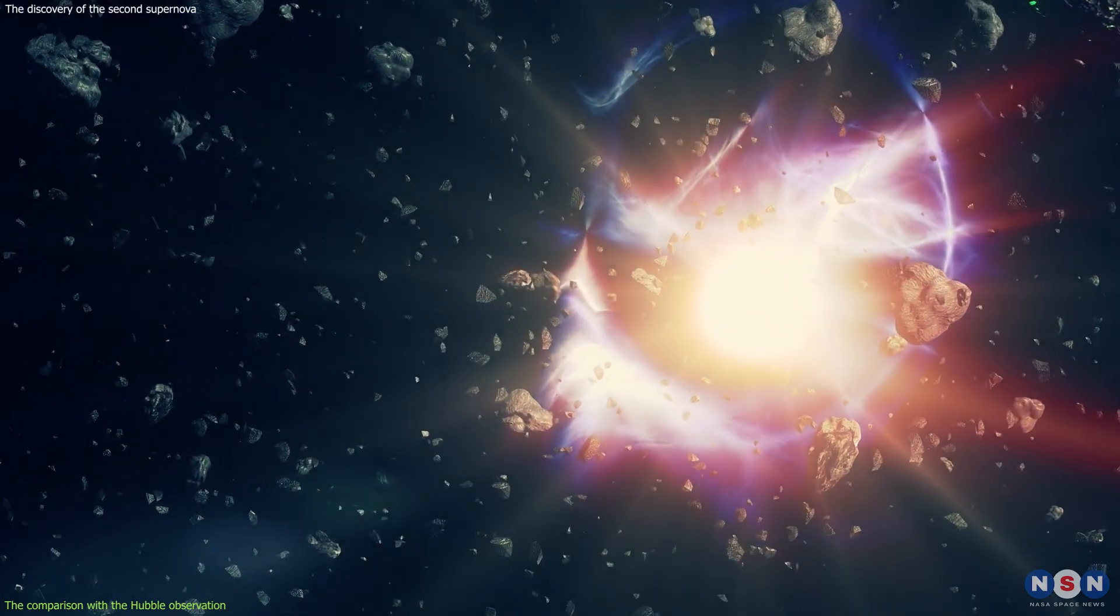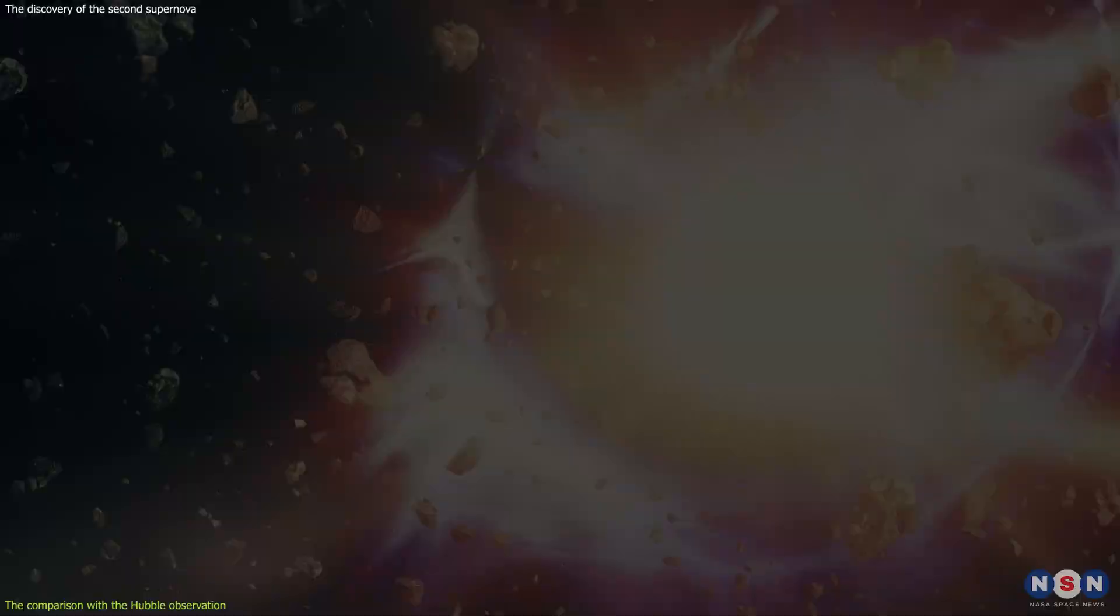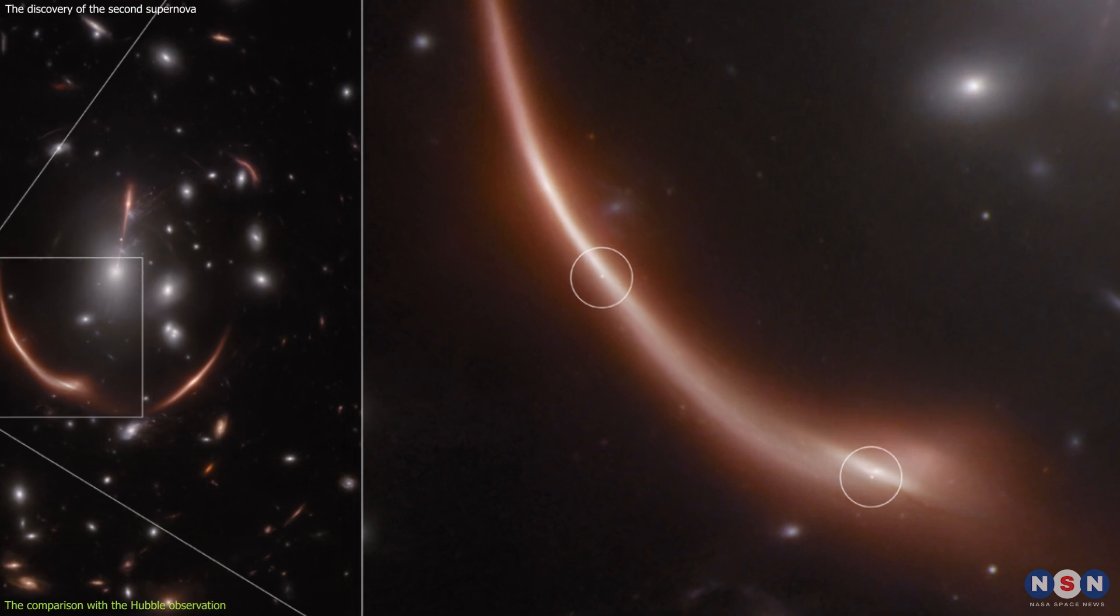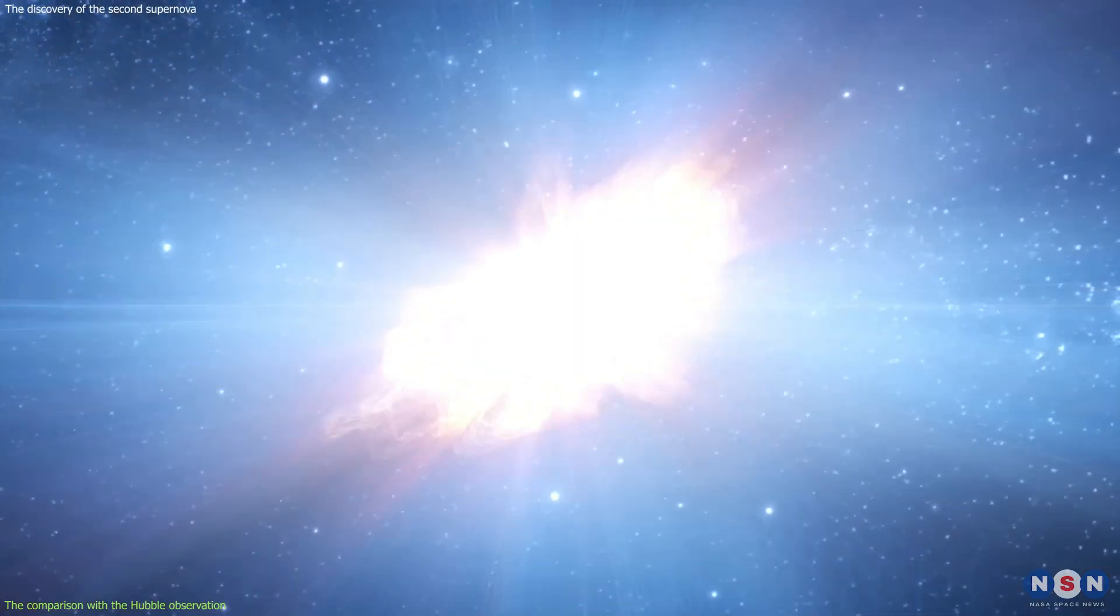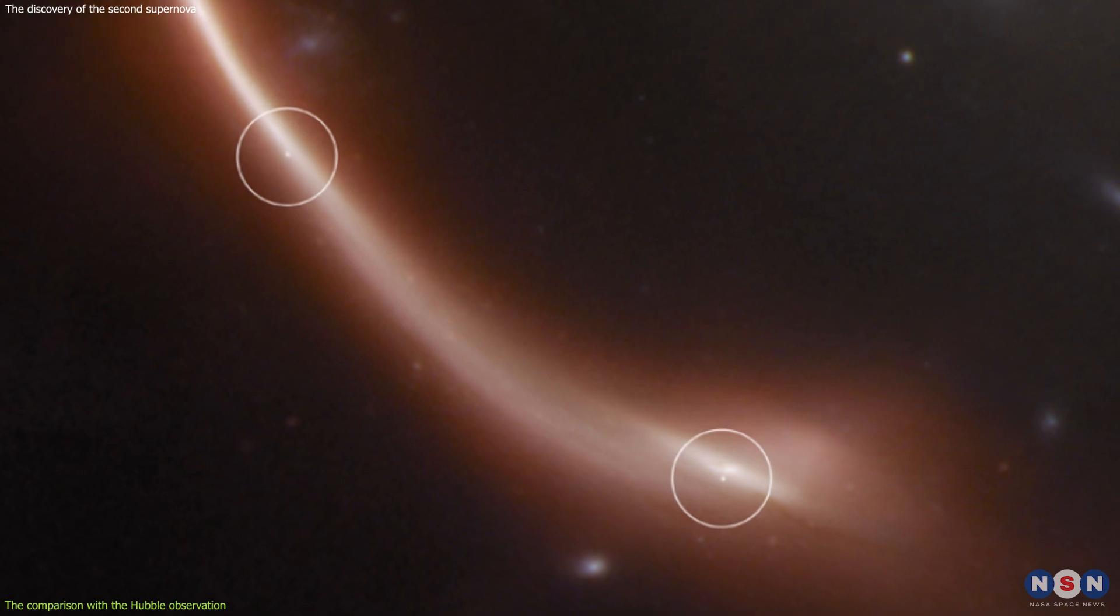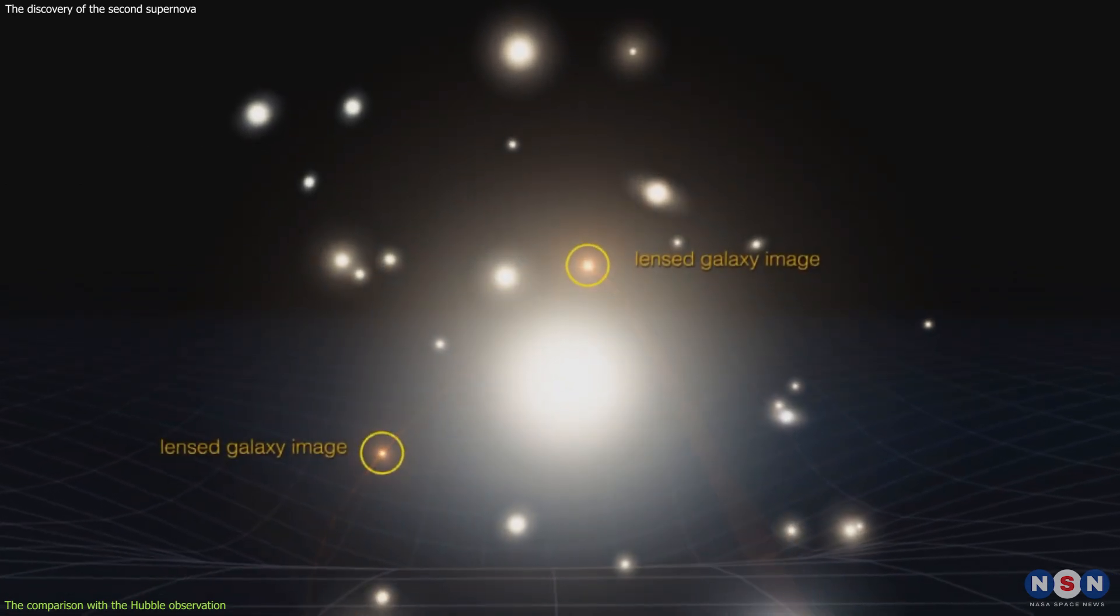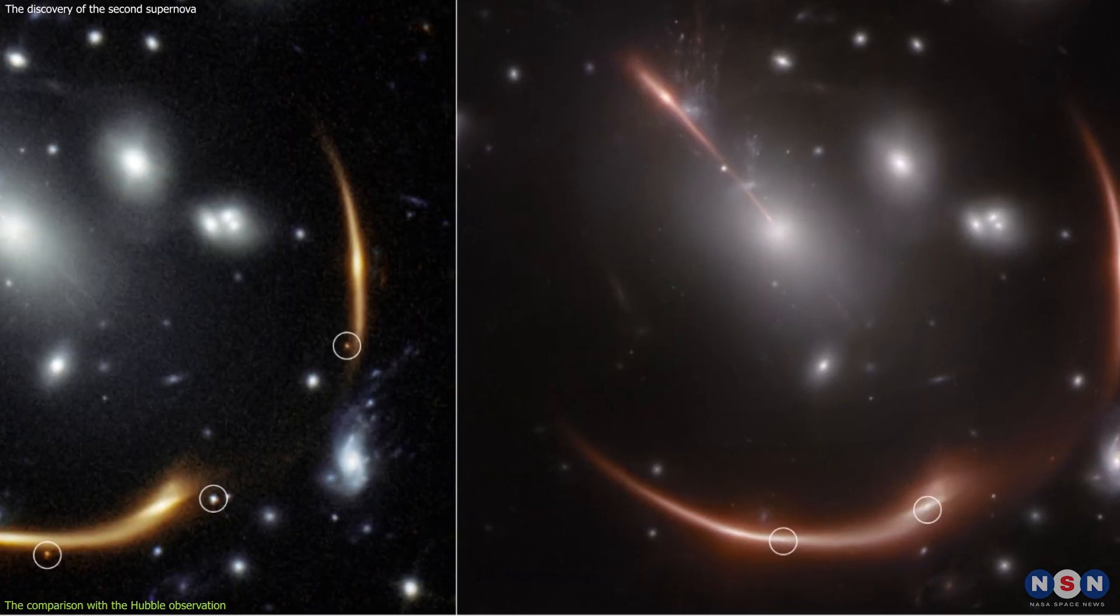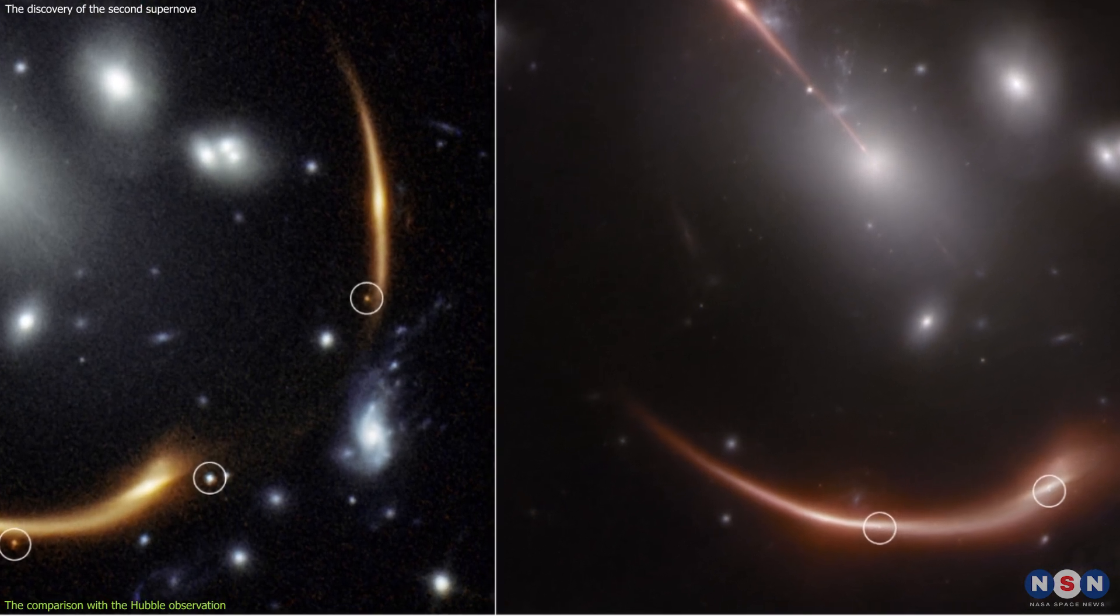It depends on the intrinsic luminosity of the supernovae, which is how much light it emits, and the apparent magnitude, which is how bright it appears to us. The intrinsic luminosity of the supernovae is related to the mass and composition of the star that exploded, and the apparent magnitude is affected by the distance and the lensing effect. By measuring the brightness of the supernovae in different images of the galaxy, we can estimate the distance and the magnification of each image, and compare them with each other.